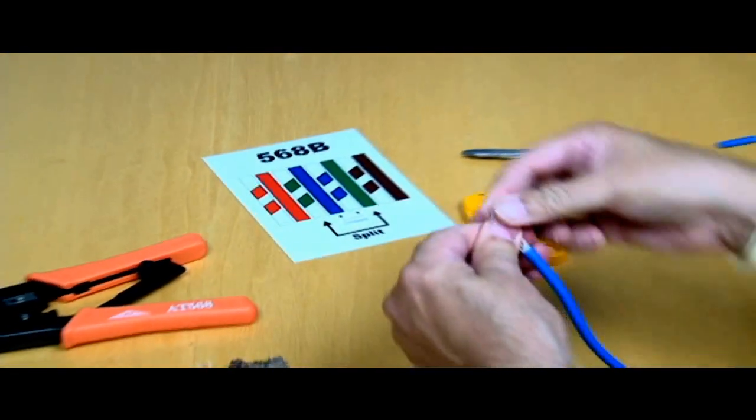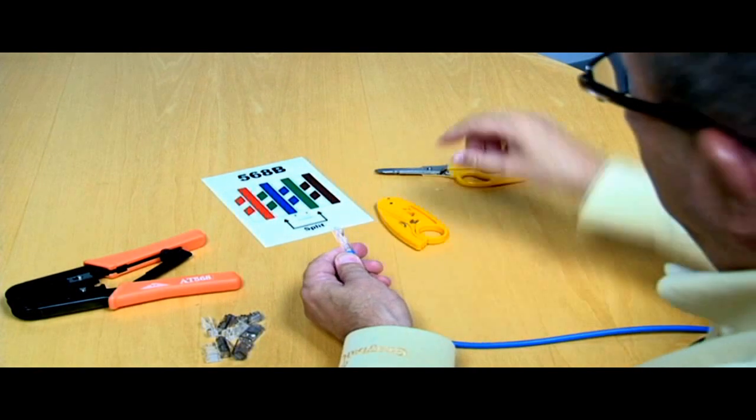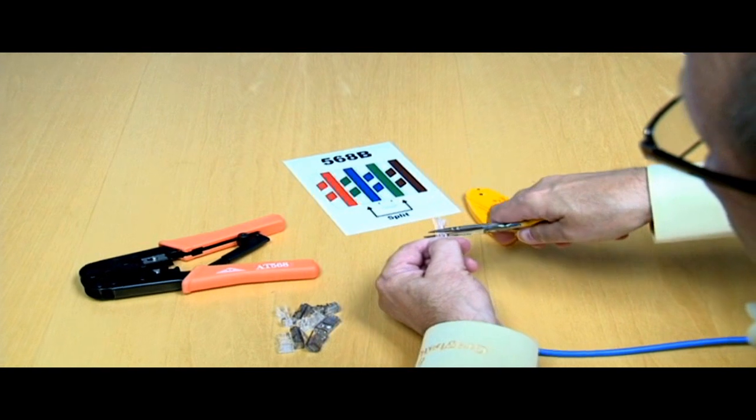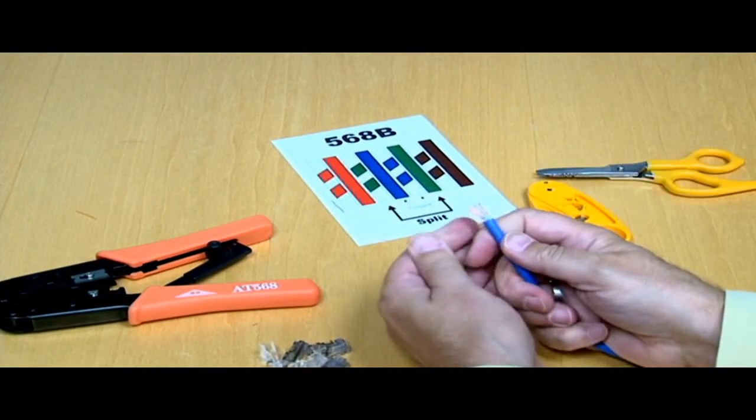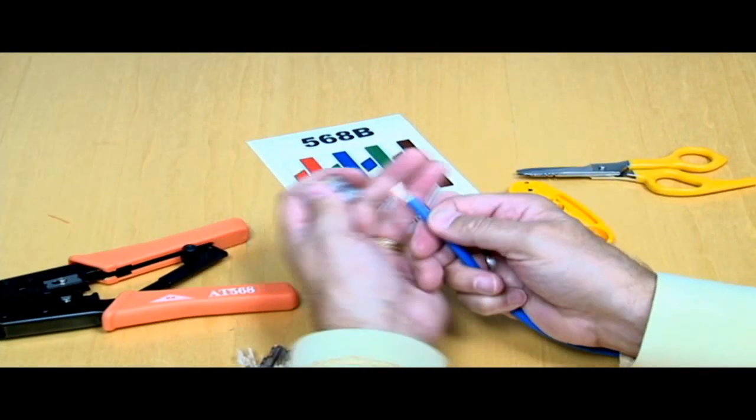Then we take our scissors, and we will cut it so there's about a half an inch of conductor remaining. About a half an inch of conductor remaining. That ought to be about right, right there.